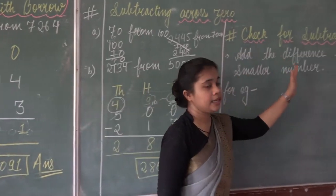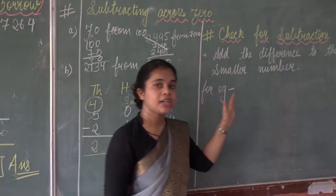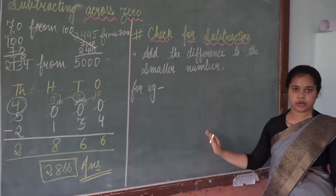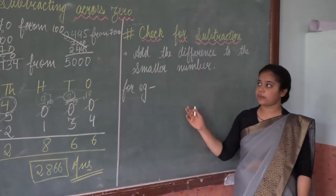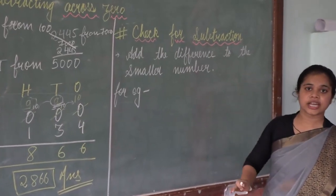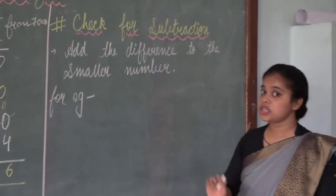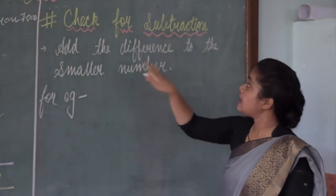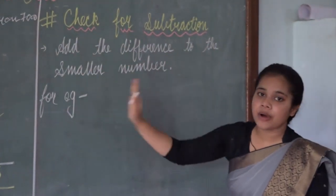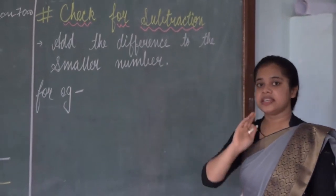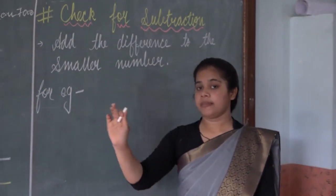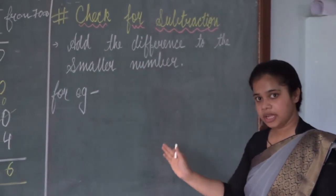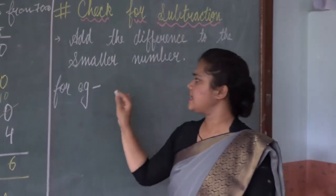Now let us see whether the subtraction we have done is correct or wrong, and how to check that. We need to check that the solution we have done is right or wrong. For that, add the difference to the smaller number. When you add the difference to the smaller number and get the greater number, your solution is absolutely right.